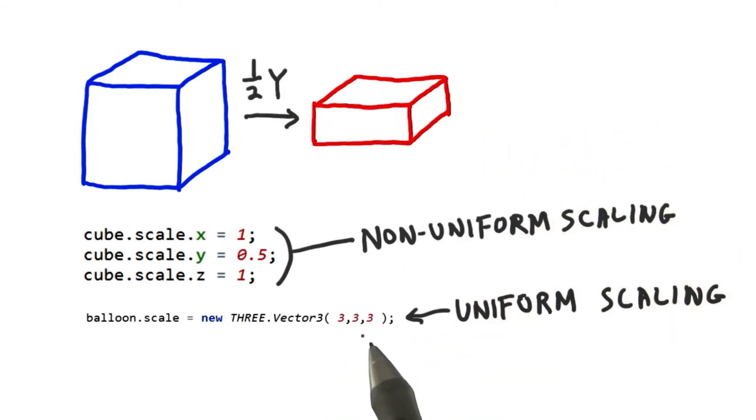When you scale an object the same amount in all directions, like we did with the balloon, this is called uniform scaling. If the scale varies, it's called non-uniform scaling. Uniform scaling does not change any angles within the model itself. Non-uniform scaling can modify angles. In other words, the shape of the model itself is changed.